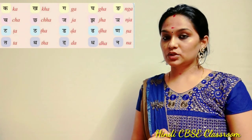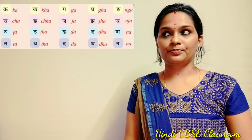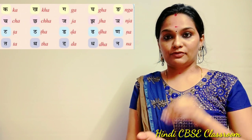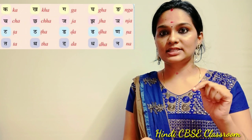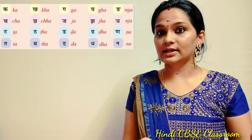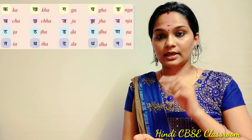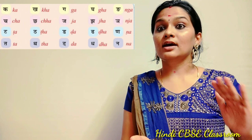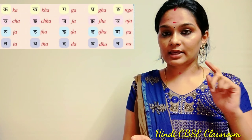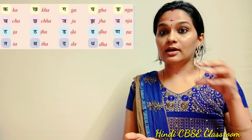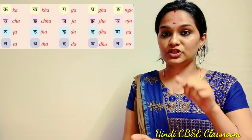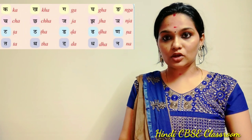Now let's move on to Vyanjan. In Vyanjan, the first letter is Ka, then Kha — H is added with the other letter. One is Ka, the other one is Kha. Then Ga, Gha — the same pattern goes with all the letters.